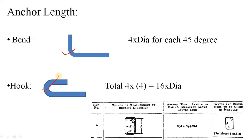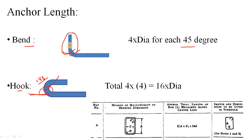When do we say bend and when do we say hook? If you bend the bar 180 degrees, that is called a hook. Every other angle of bending is called a bend — for example, a 90-degree bend. As per the Indian Standard code, for every 45 degrees of bend you must provide an anchor length of 4 times the diameter of the bar. So for a 90-degree bend: 90 ÷ 45 = 2, and 2 × 4d = 8d. This is the anchor length for a 90-degree bend.